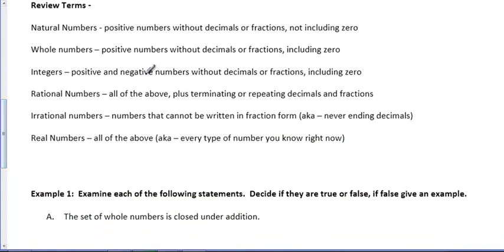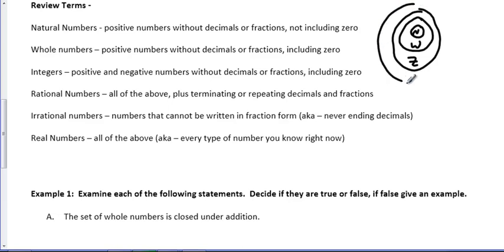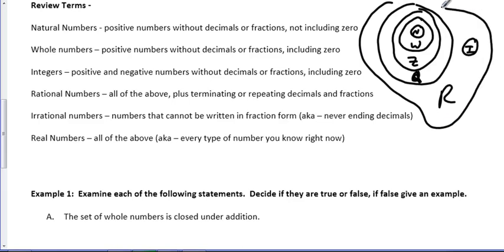This is just a review of your terms. I'm going to draw this little figure here which you've seen before. Natural numbers are our smallest. Next is the whole numbers. After that, our integers. After that, we have our rational numbers, which we'll use a Q for. Then off to the side, we have our irrational numbers, and then the whole thing we call real numbers.